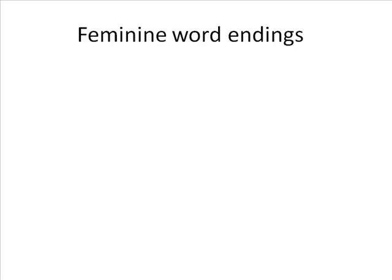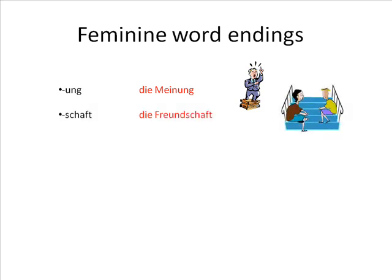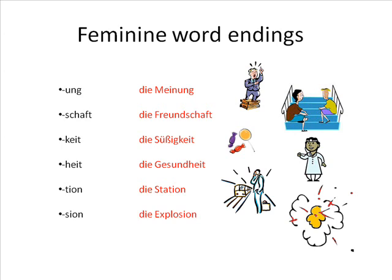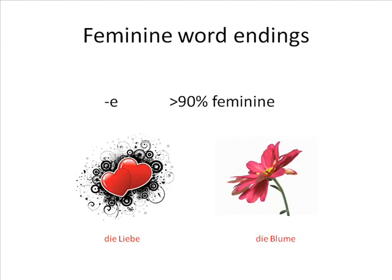Moving on to feminine nouns, there are quite a lot of endings that occur frequently meaning a word is feminine. These are: '-ung', for instance 'Meinung' (opinion); '-schaft', for instance 'Freundschaft' (friendship); '-keit', for instance 'Süßigkeit' (sweetness); '-heit', for instance 'Gesundheit' (health); '-tion', for instance 'Station' (station); '-sion', for instance 'Explosion' (explosion); and '-in', for instance 'Freundin' (girlfriend or female friend). Also, over 90% of nouns ending in '-e' are feminine, such as 'Liebe' (love) or 'Blume' (flower).